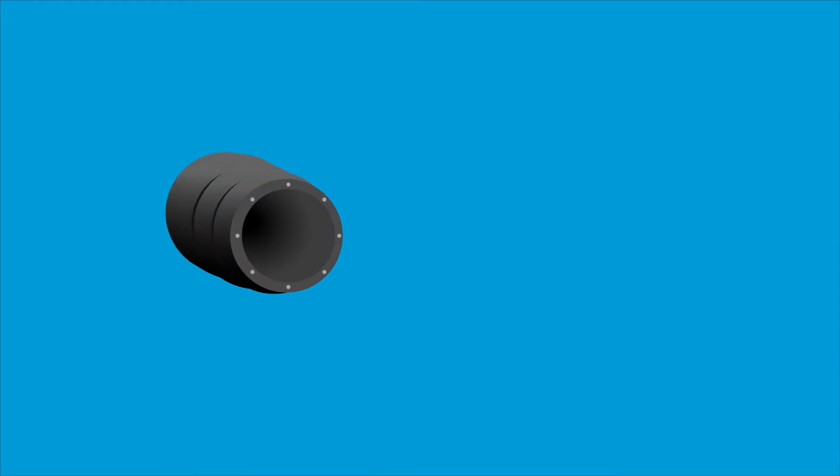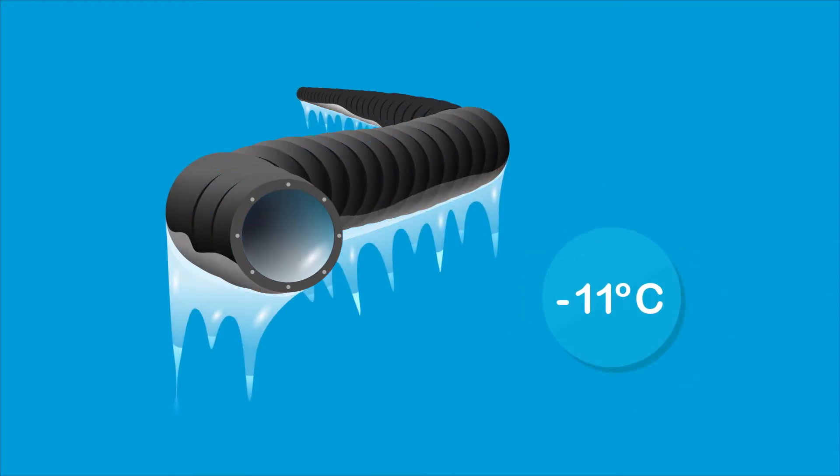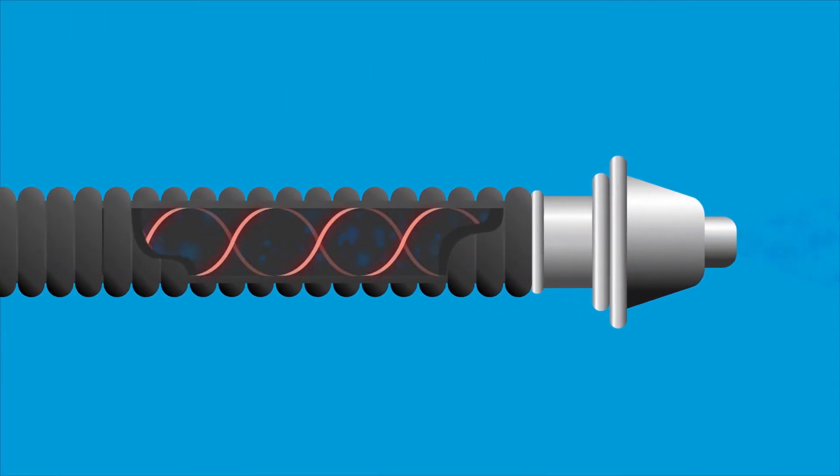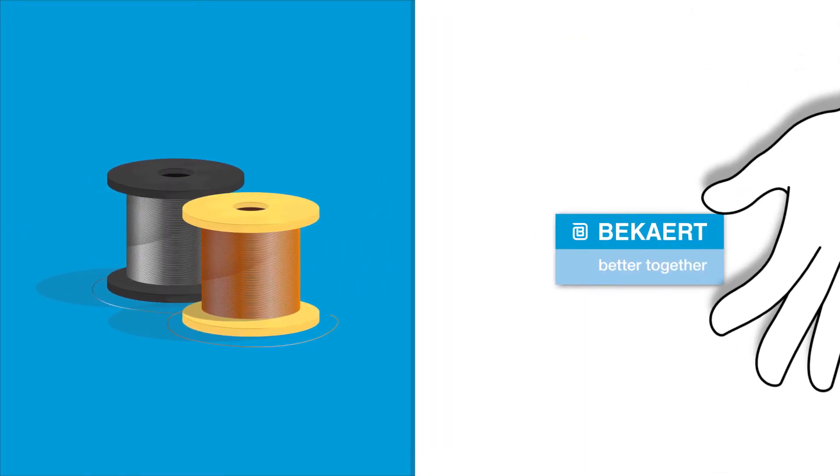However, DEF freezes at a temperature of minus 11 degrees Celsius, stopping the system from working. To prevent this from happening, heating cables are processed in or around the SCR tubes. Steel wire producer Beccart has designed and tested an extensive range of cables specifically for this use.